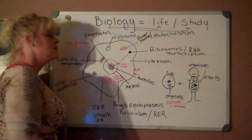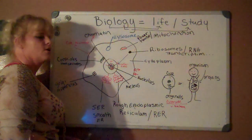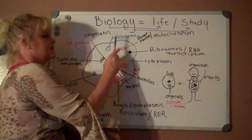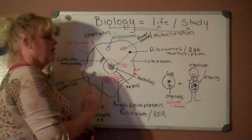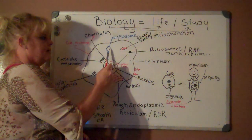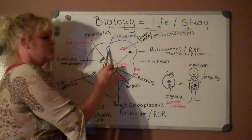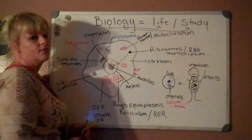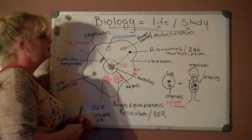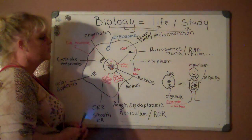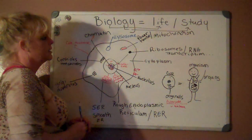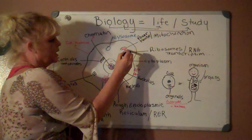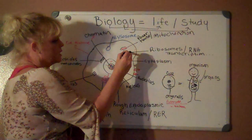Then we have a little brownish structure that is usually related to carbs — that's your lysosome. We'll go over the details later.